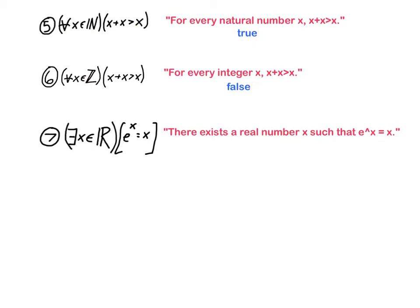Number seven says there exists a real number x such that e to the x is equal to x. This one is a little bit harder to decide because, well, it's not quite so obvious. So one technique for doing that might be to draw the graphs of e to the x and x on the same set of coordinate axes and see if they ever seem to cross.